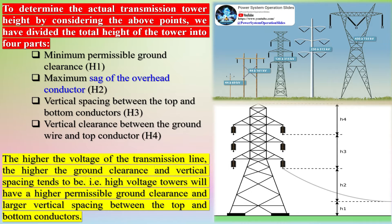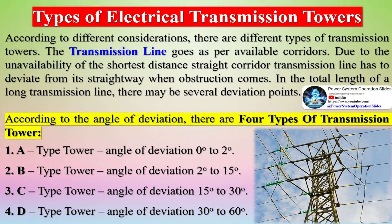To determine the actual transmission tower height, the total height is divided into four parts: H1 — minimum permissible ground clearance; H2 — maximum sag of the overhead conductor; H3 — vertical spacing between the top and bottom conductors; and H4 — vertical clearance between the ground wire and top conductor.